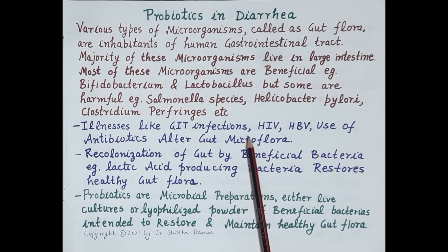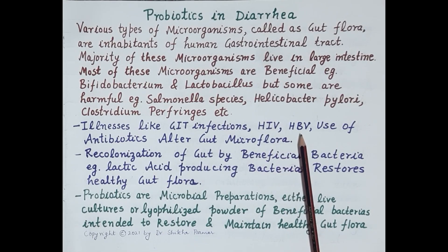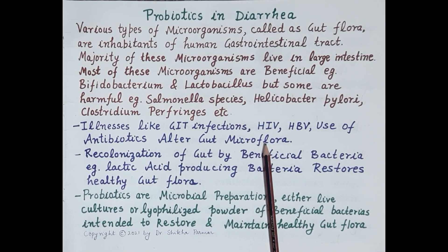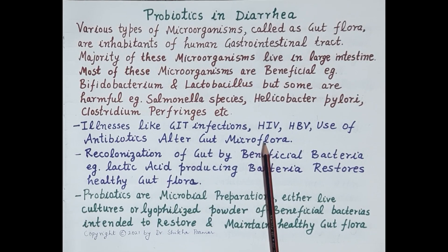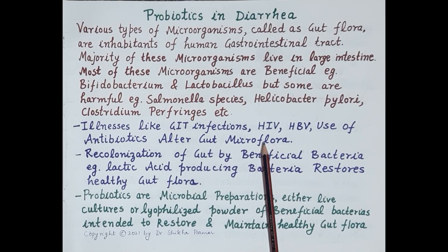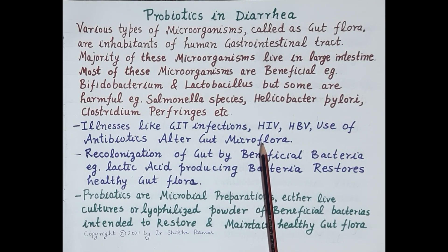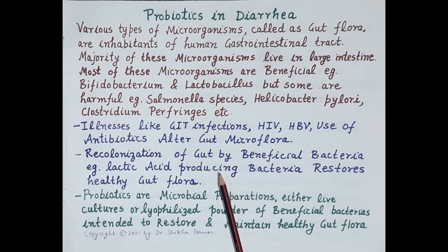Illnesses like gastrointestinal tract infections, HIV, hepatitis B virus, and the use of antibiotics alter gut microflora. These diseases and antibiotic use reduce the population of beneficial bacteria, allowing bad bacteria to thrive in the gastrointestinal tract, resulting in gut bacteria imbalance. Recolonization of the gut by beneficial bacteria — for example lactic acid producing bacteria — restores healthy gut flora.